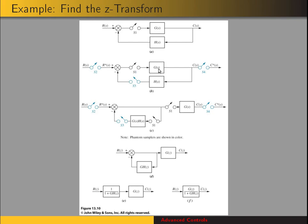We want to move this block and this sampler past the pick-off point. We can do so by copying the block to both branches of the pick-off point, giving us G and G, and the same with the sampler, giving us S1 and S1. Now we've moved the block and the sampler past the pick-off point. We now have sampled inputs and outputs throughout. The subsystem transfer function is G of S times H of S, so the Z-transform is just Z-transform of GH. Then G of S with sampled input and output gives G of Z and R of Z. Here is our block diagram in the Z domain.